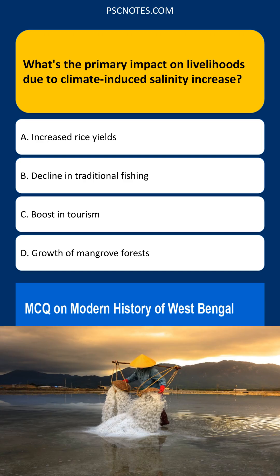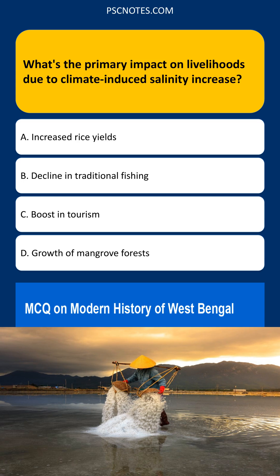What's the primary impact on livelihoods due to climate-induced salinity increase? Options: increased rice yields, decline in traditional fishing, boost in tourism, growth of mangrove forests. The correct answer is: decline in traditional fishing.